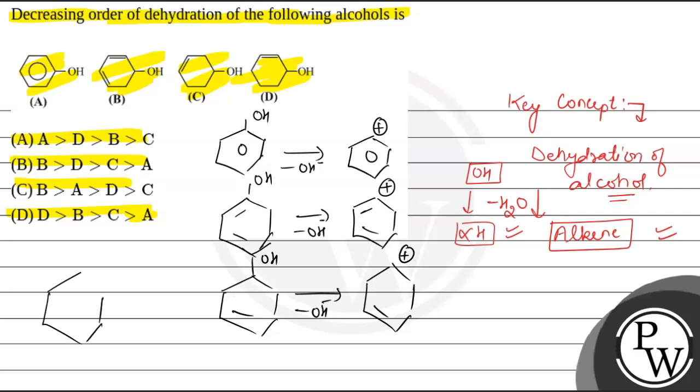And similarly, in option D, the corresponding molecule is given, and when we remove one OH negative ion, the corresponding cation is being formed like this.